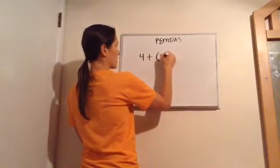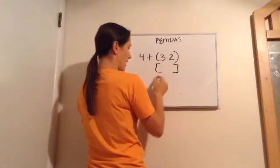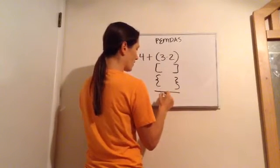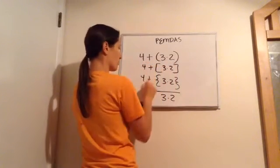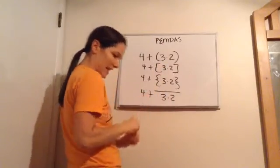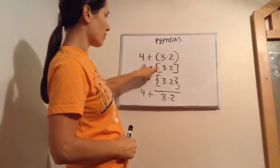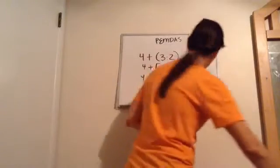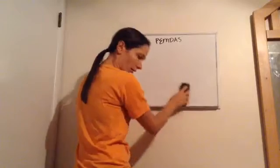So if you were to see the problem 4 + (3 × 2), it could be written with parentheses, brackets, or a line over 3 × 2. Any of those ways mean the same thing. When you see brackets or a line over top, those are all symbols of inclusion — that's what that P for parentheses actually means.